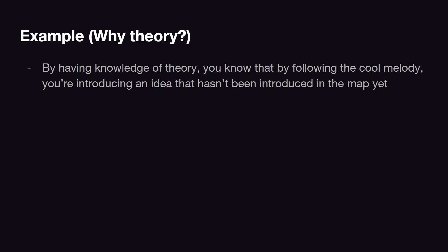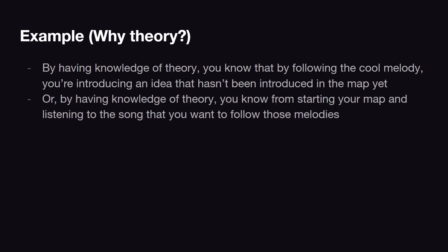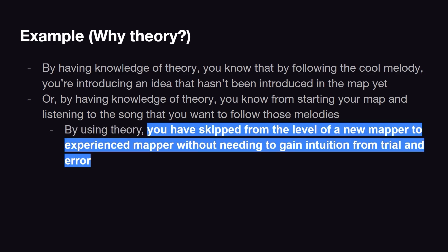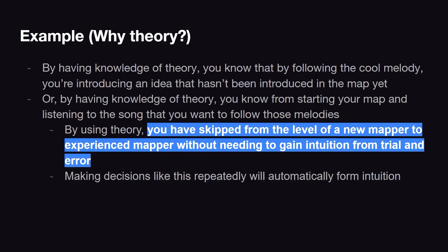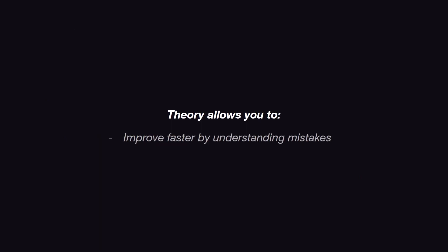By having theory knowledge, you know that following the cool melody this far into the map would make your map worse by introducing inconsistency — or maybe you started your map knowing that's what you want to follow and you've implemented those rhythms all the way until now. By using theory, you've made the same decision as an experienced mapper without needing to gain intuition through trial and error. Making decisions like this all the time does form intuition eventually. Theory allows you to improve faster by understanding mistakes.